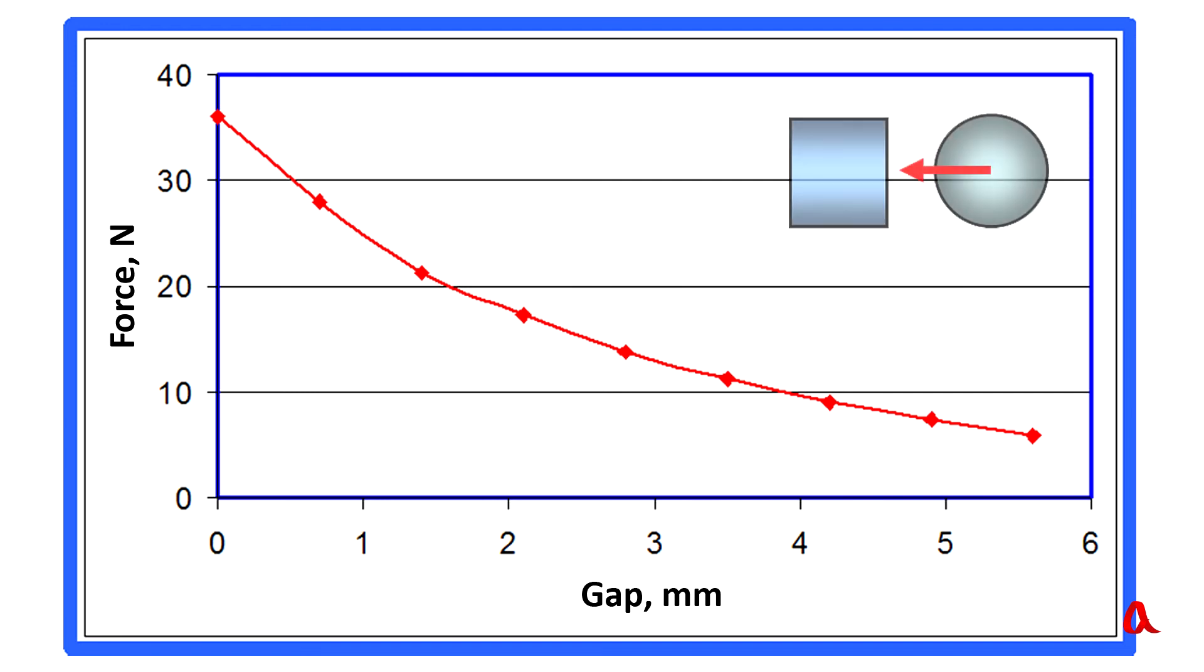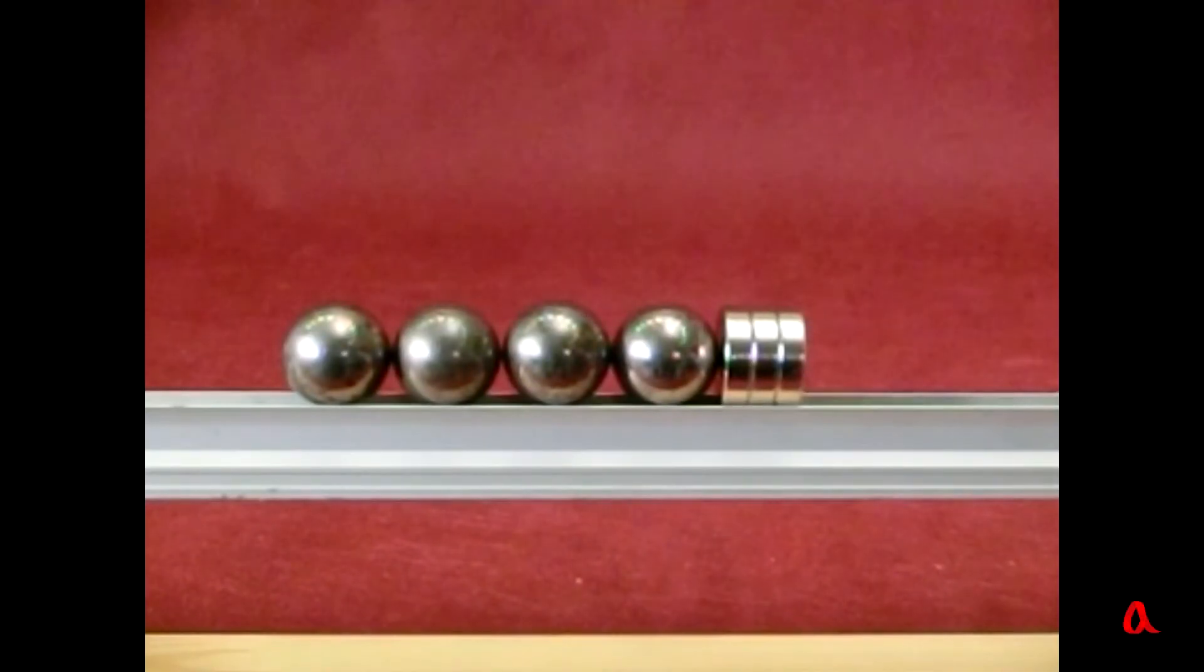That is why the ball acquires its speed literally at the last few millimeters whilst approaching the magnet. Let us have a look at this motion having filmed it by a speed camera.